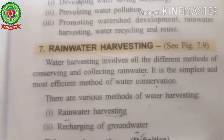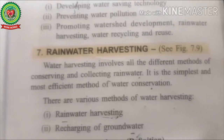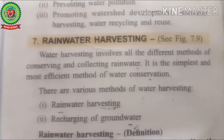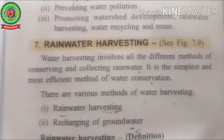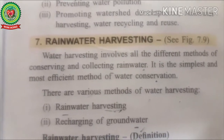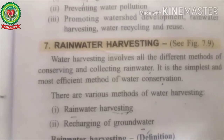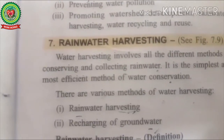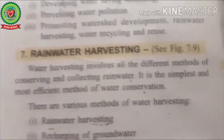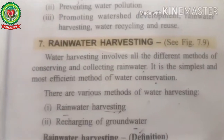Water harvesting involves all the different methods of conserving and collecting rainwater. Water harvesting means capturing rainwater where it falls and capturing runoff from the catchment and streams. Generally, water harvesting is direct rainwater collection. This collected water could be stored for later use and recharged into the groundwater. It is the simplest and most efficient method of water conservation, and there are various methods of water harvesting.